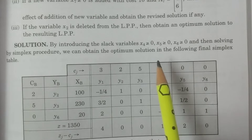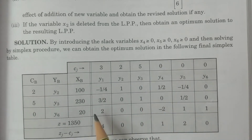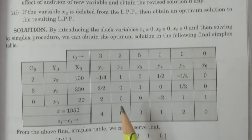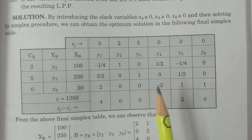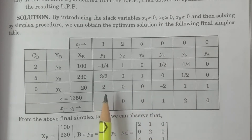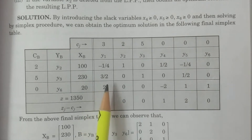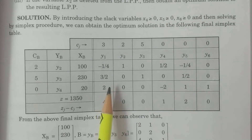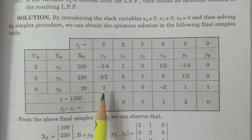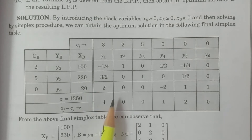First of all, we apply the simplex method to calculate the optimum solution. Apply the simplex procedure and find out the optimum solution. After the last simplex table, we have the optimum solution. The last simplex table is the final optimum simplex table. We draw this table.